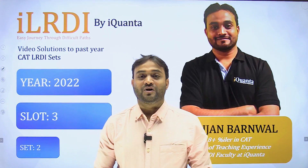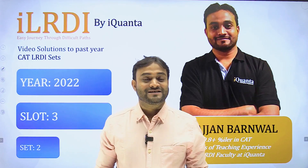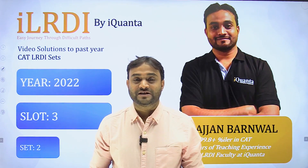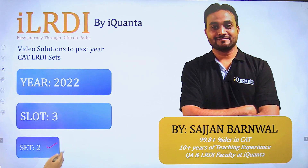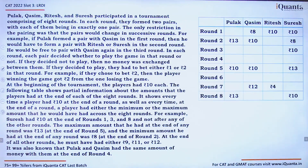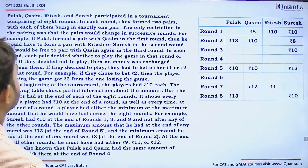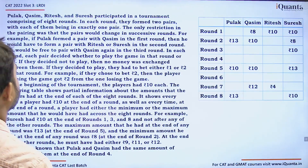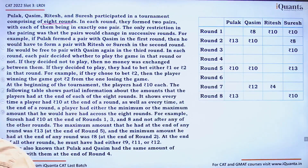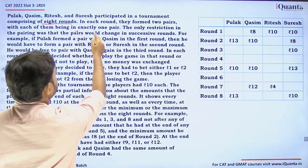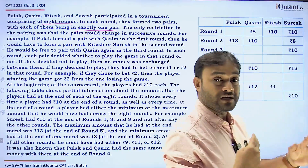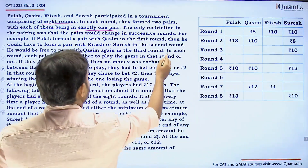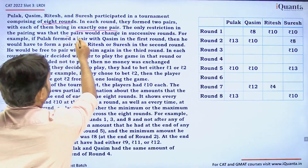Welcome to iQuanta. Let's discuss an amazing logical set based on tables. This set is from CAT 2022 Slot 3. Pulak, Kasim, Ritesh, and Suresh participated in a tournament comprising eight rounds. In each round they formed two pairs, with each of them being in exactly one pair — meaning if P and R are one pair, then Q and S will be the other pair.